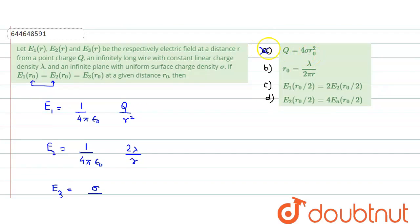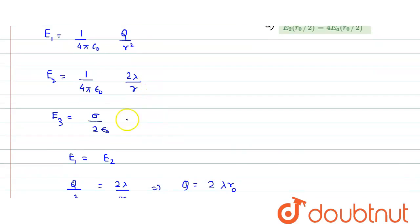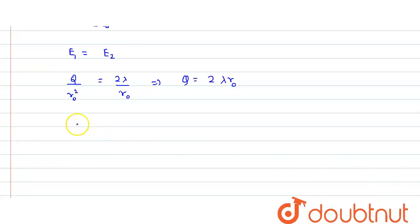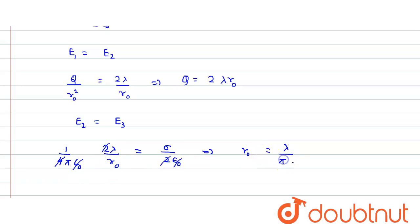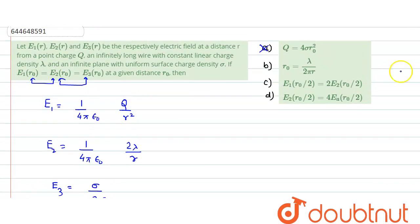The option suggesting Q equals 4 sigma r₀² would be wrong. Now we equate E2 and E3: (1/4πε)(2λ/r₀) equals sigma divided by 2 epsilon. Solving this, epsilon cancels, and r₀ turns out to be lambda divided by pi times sigma. So the option where r₀ equals lambda over 2pi sigma is also wrong.